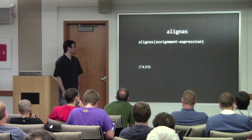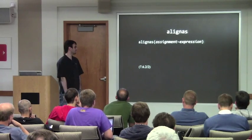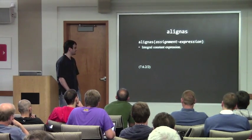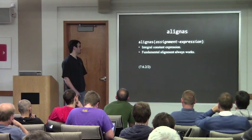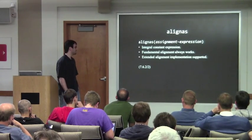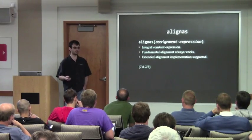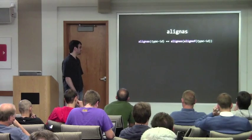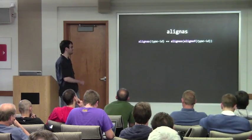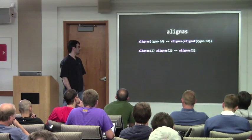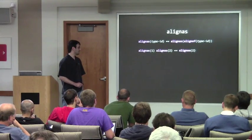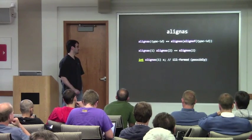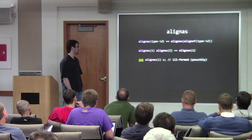`alignas` has two forms. The first takes parentheses with an assignment expression — it has to be an integral constant expression. A fundamental alignment always works. An extended alignment is implementation-supported, and in each context it can have a different maximum extended alignment. Zero has no effect — it's as if the attribute was not there. The other form is a type-id, equivalent to `alignas(alignof(type))`. When you have multiple `alignas` on a declaration, it takes the strictest alignment. You cannot under-align — so specifying `alignas(1)` on an `int` is ill-formed, assuming `int` is not aligned to one.